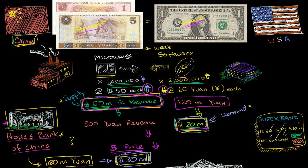Let's review how China can maintain a trade imbalance with the United States by artificially keeping its currency weak. We had a simplified scenario where we had an exchange rate of 6 yuan per $1. We had a Chinese manufacturer selling $50 million worth of microwaves in the United States, and a US software producer selling $20 million worth of software in China.